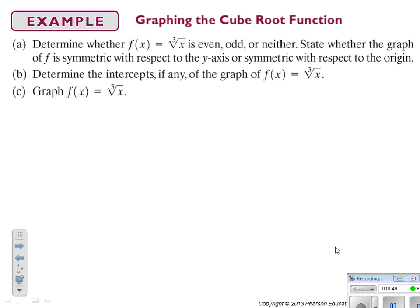The next one is the cube root function. Unlike the square root function, this is numbers that multiply by itself three times to give you your output. We need to determine whether the cube root function is even, odd, or neither, and state whether the graph is symmetric with respect to the y-axis or origin. We'll also figure out intercepts and then graph it.